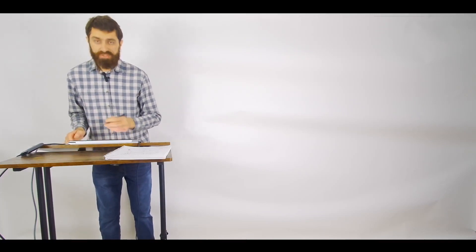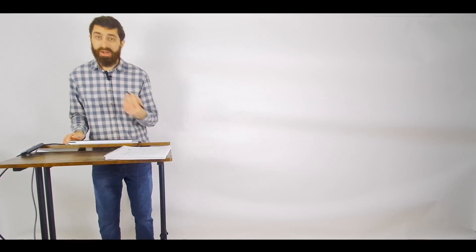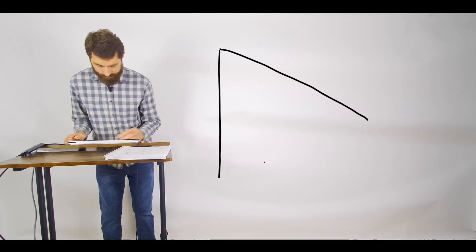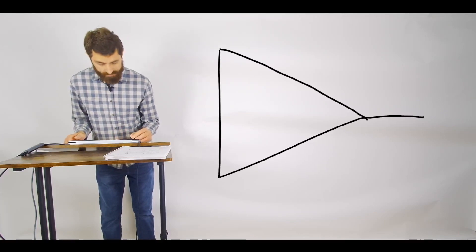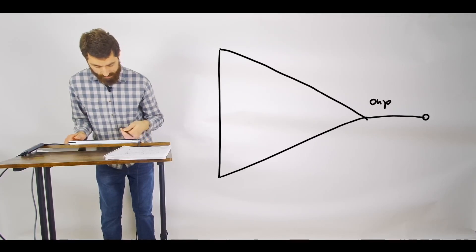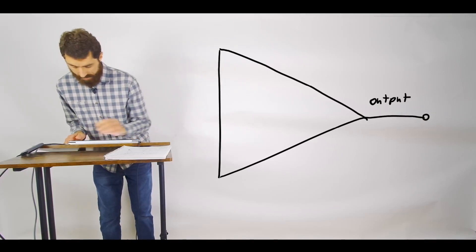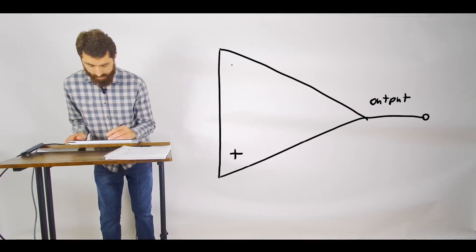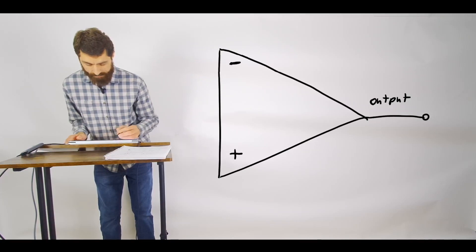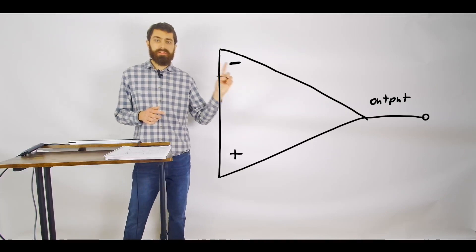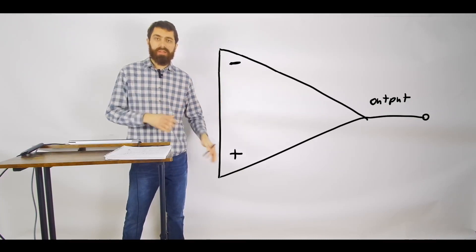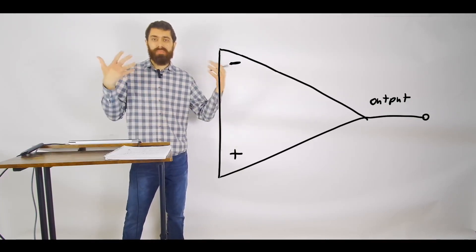So let's first sketch out the equivalent circuit for an ideal op-amp. So you have your op-amp here. So you have the output, and then you have your non-inverting input and your inverting input. I want to make note of the fact that these minus and plus signs are not referring to voltages in the circuit.